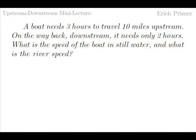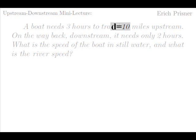So let's look at our example again. A boat needs three hours to travel ten miles upstream. On the way back downstream it needs only two hours. What is the speed of the boat in still water and what is the river speed? We know the quantities d equals ten, tu equals three, td equals two. The distance and the times.